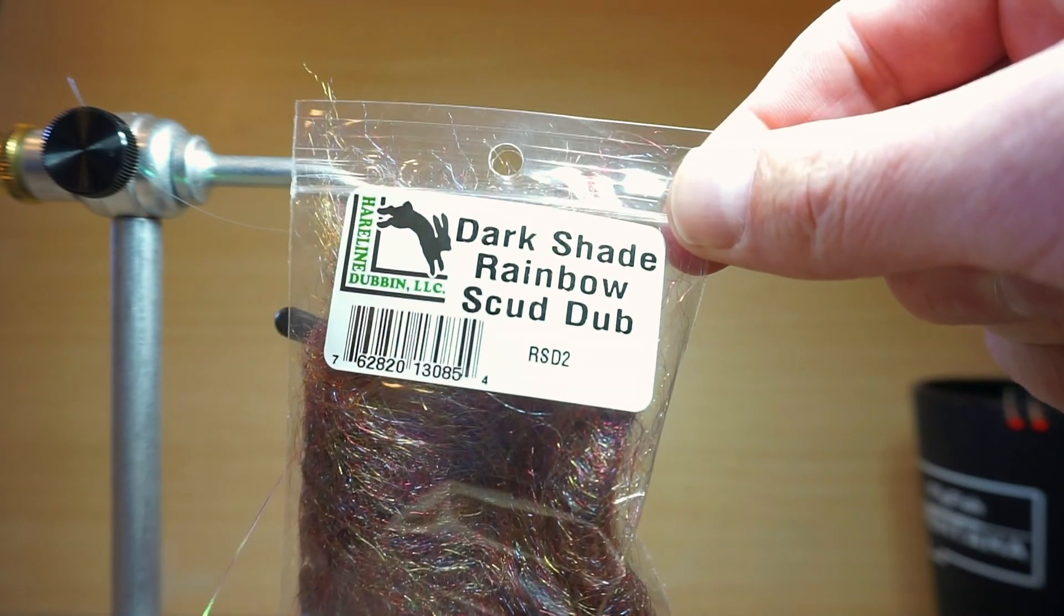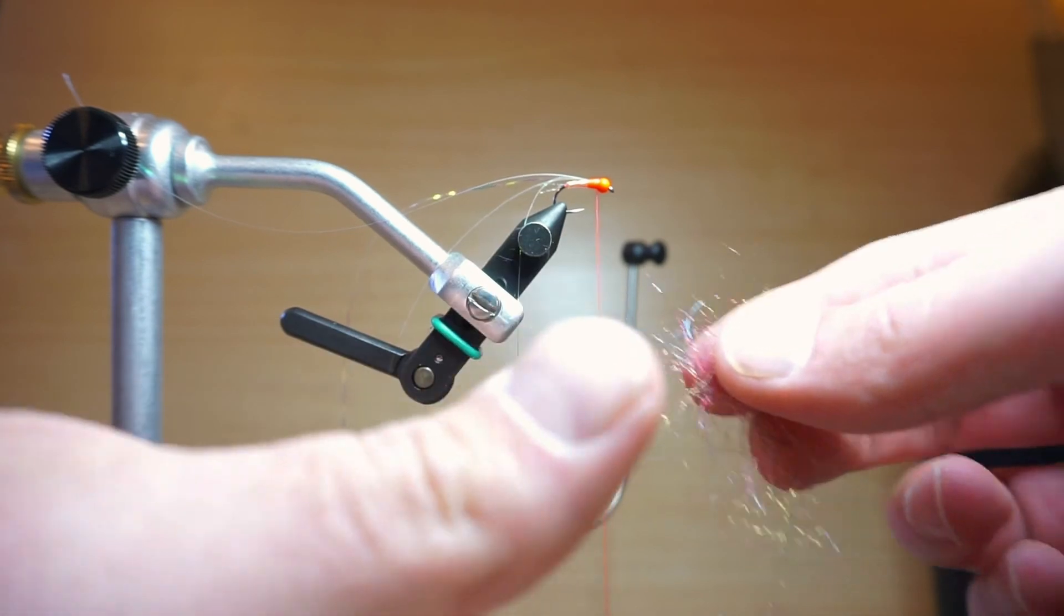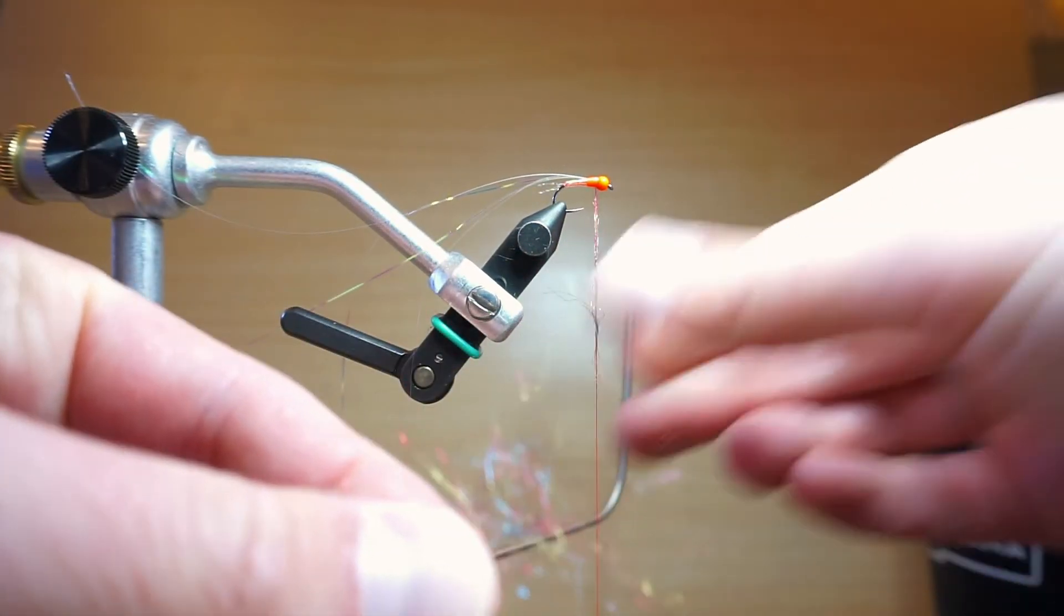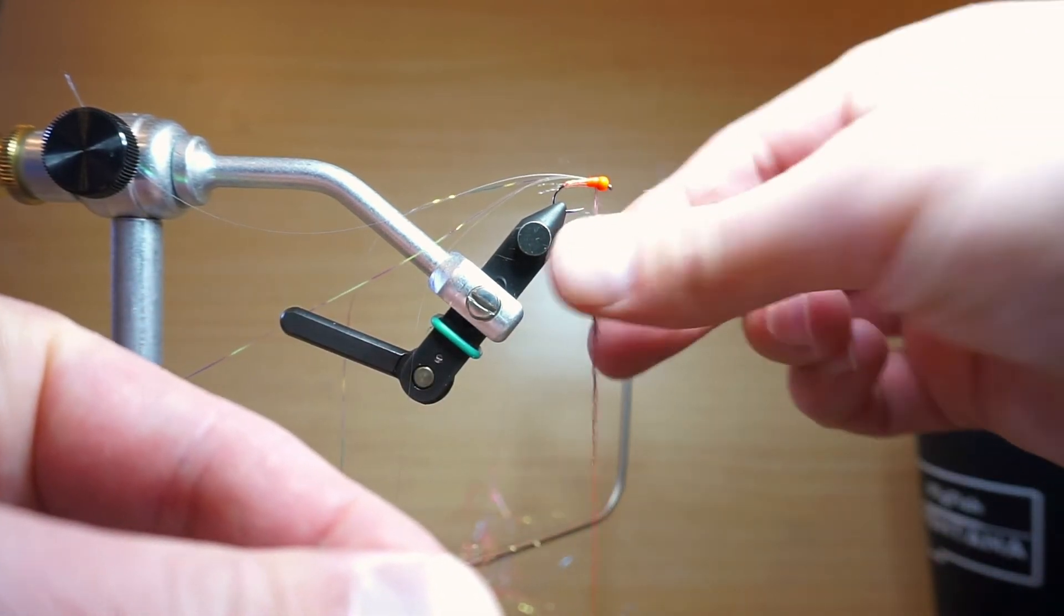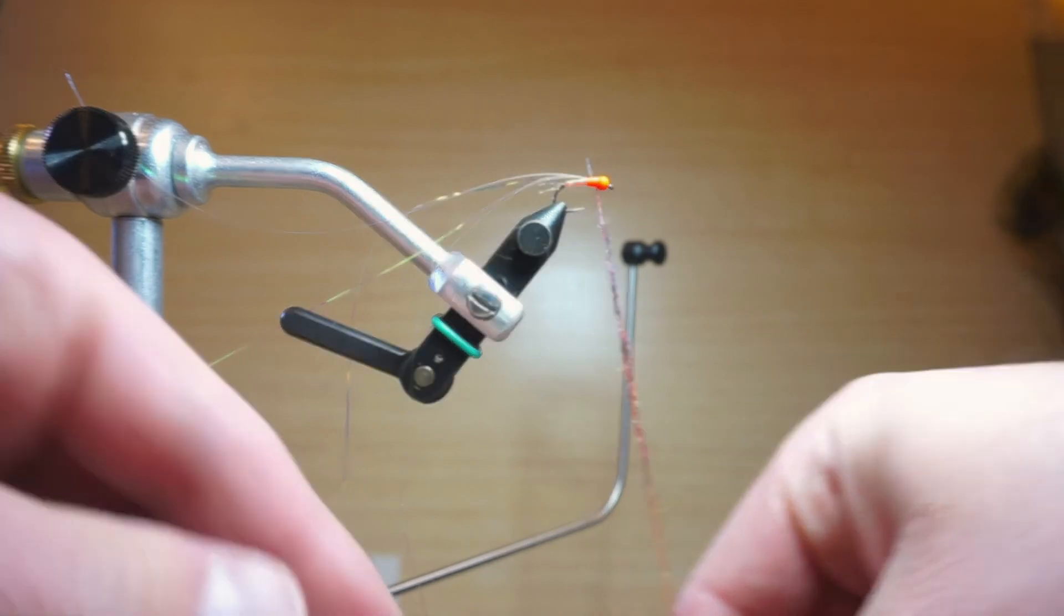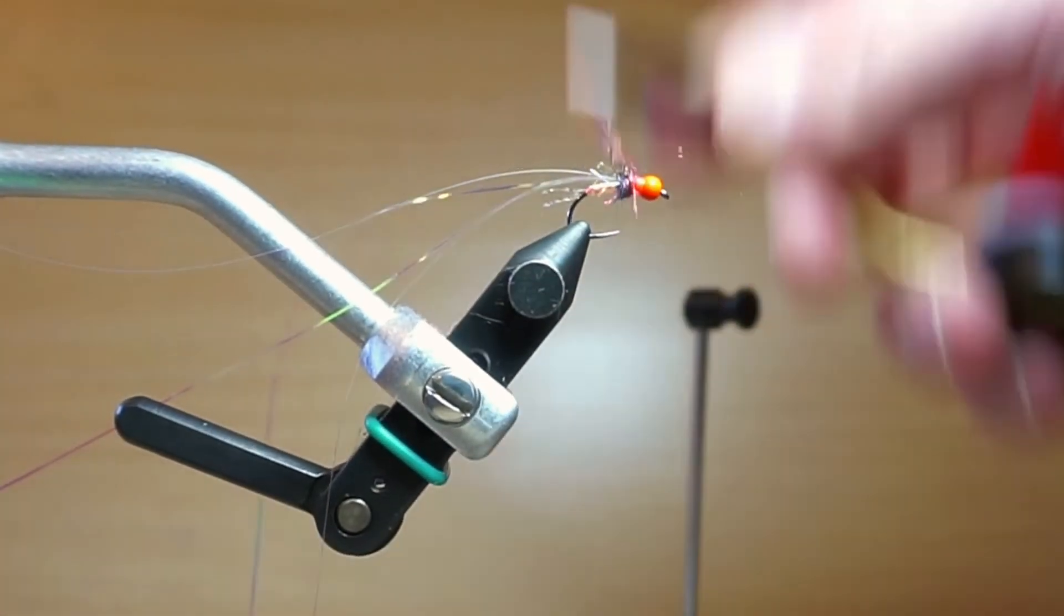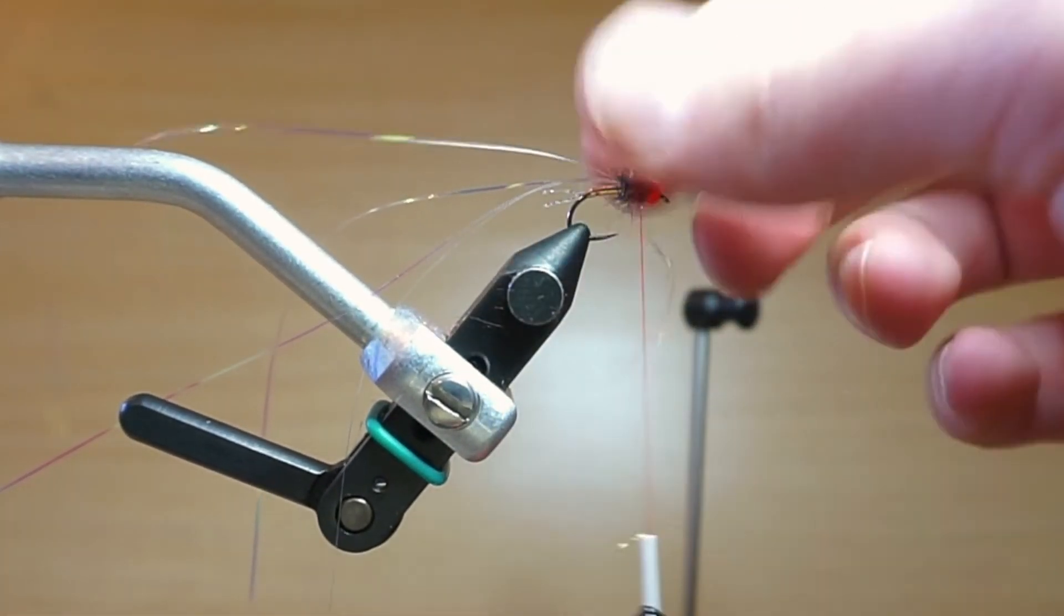And we're going to use some dark shade rainbow scud dub to create a nice little thorax here. I like to put the dubbing on just a little piece at a time. It helps me control how much I'm putting on and the taper of the dubbing noodle, especially with synthetics. I feel like you have to be a little bit more conservative with how much you're putting on at each time. And you can always add a little bit more.